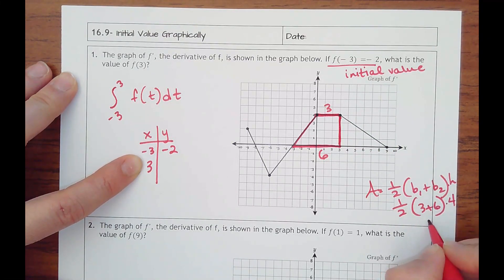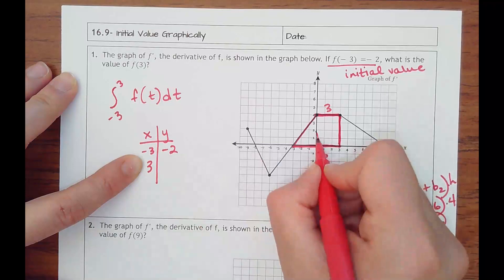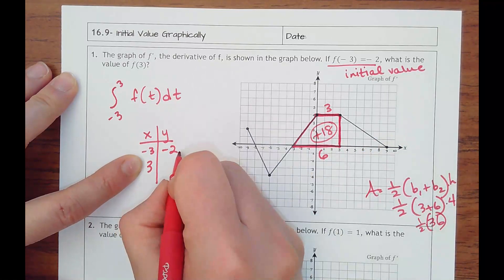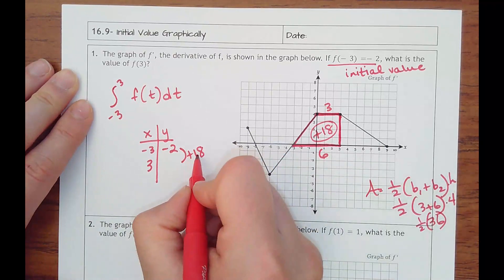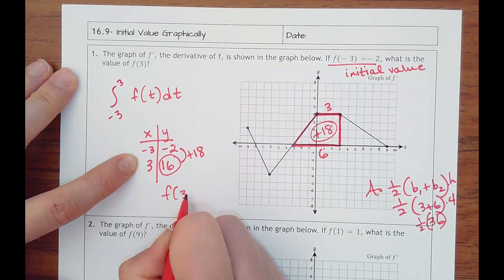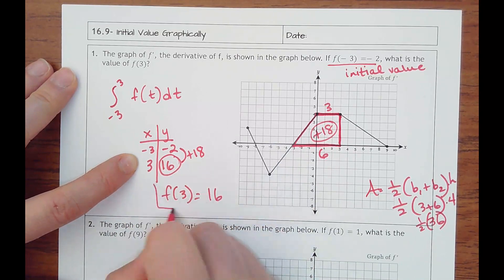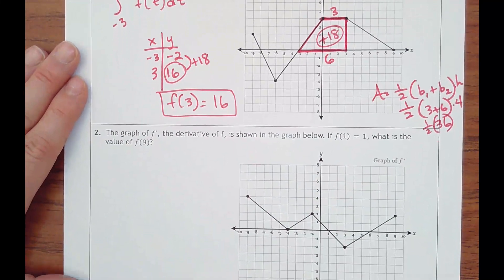Three plus six is nine, nine times four is 36, half of 36 is 18, and it's positive. So starting at negative two, I should be adding a rate of change of 18, which should get me 16. So f of three was really 16.